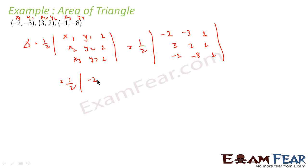Just let us solve this. 1 by 2, -2 into 2 into 1, minus -8 into 1. Minus -3 into 3 into 1, minus -1 into 1. And then plus 1 into 3 into -8 into 3, minus 2 into -1. So this comes out to be 1 by 2 mod of -2 into, this is 2 plus 8, 10. -2 into 10 is -20.